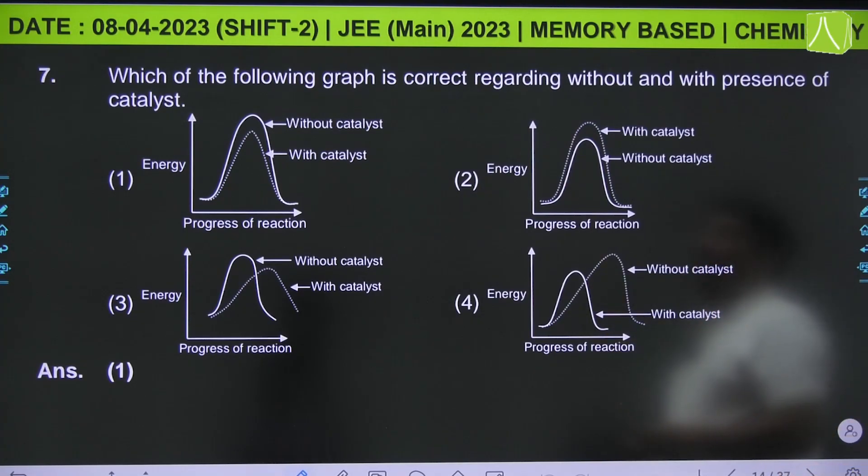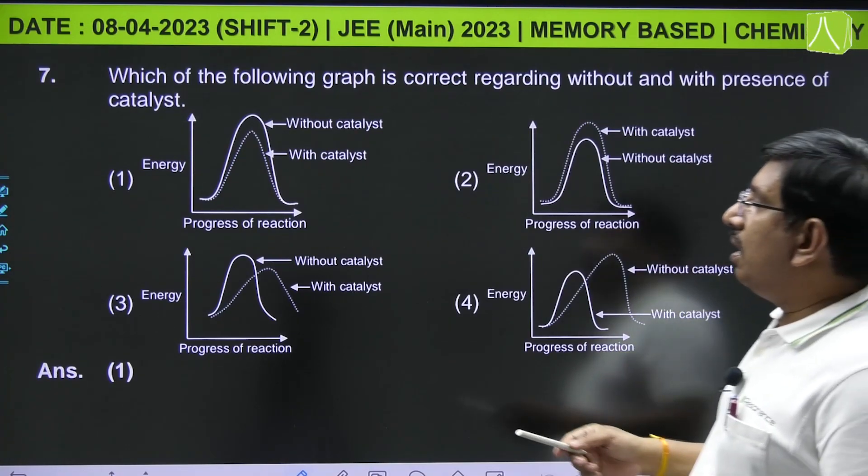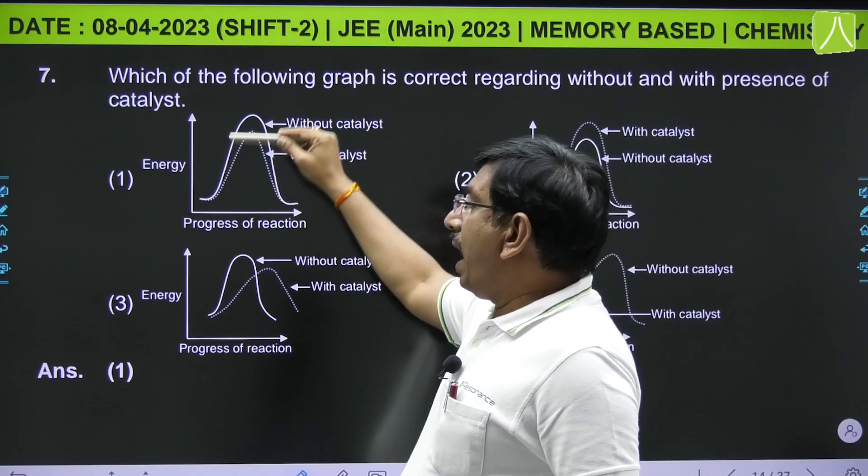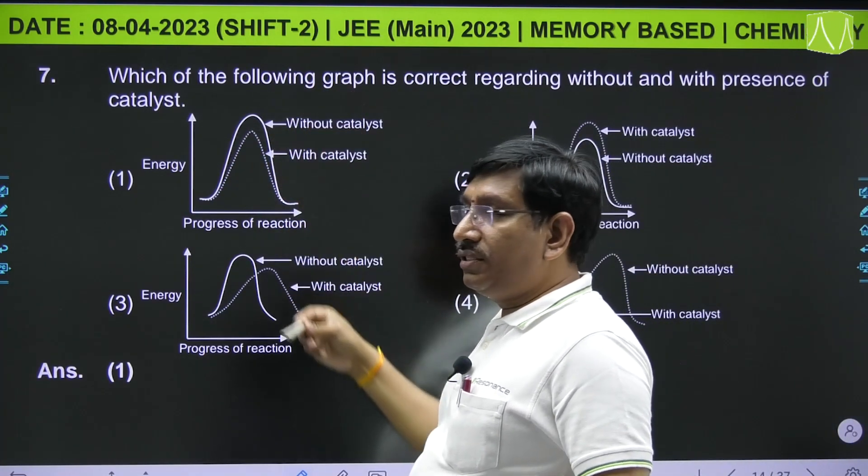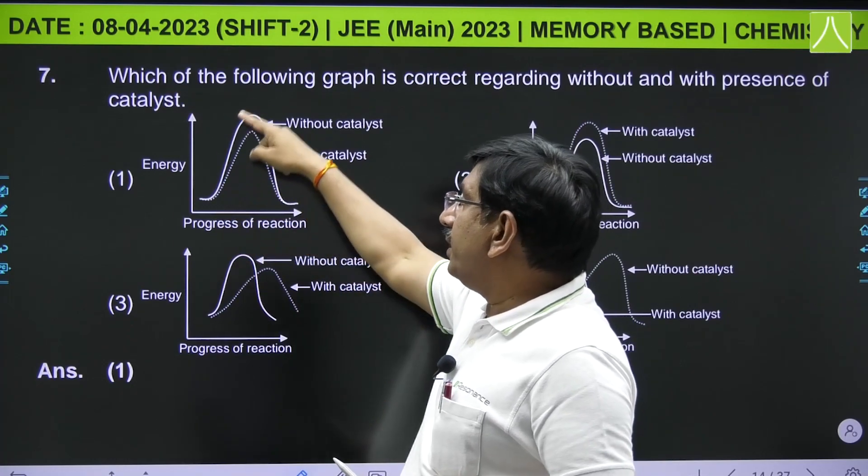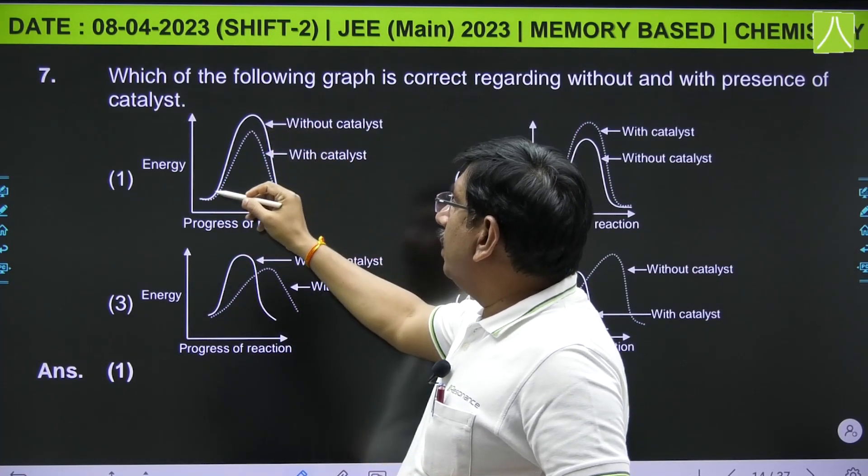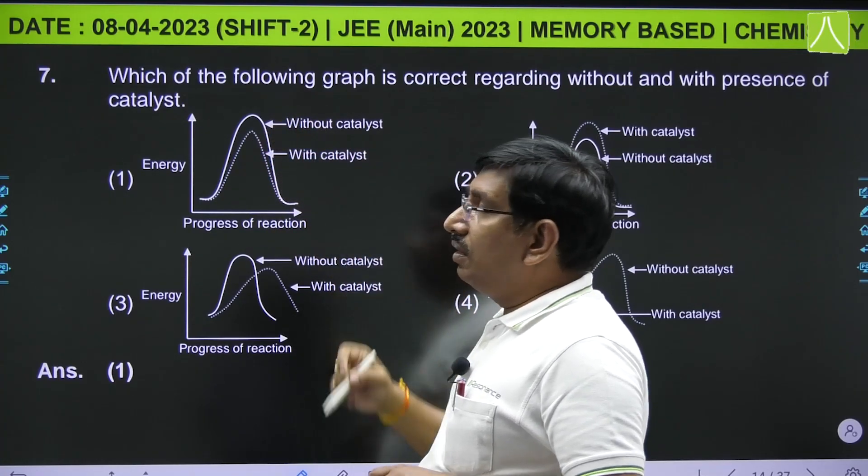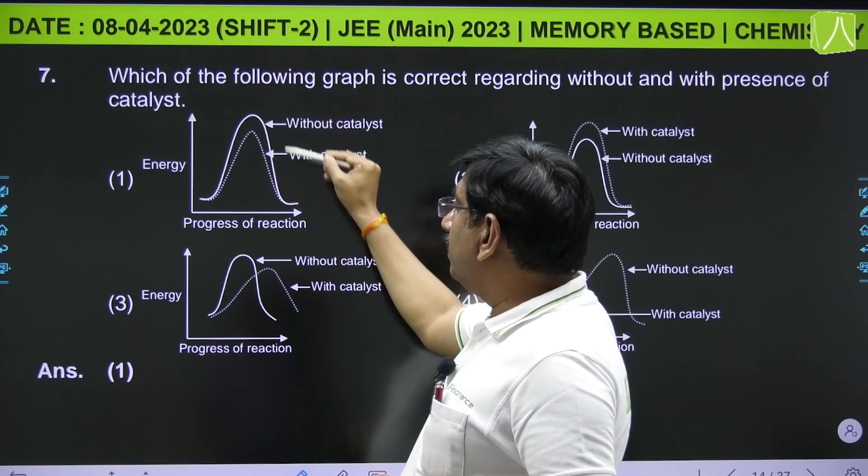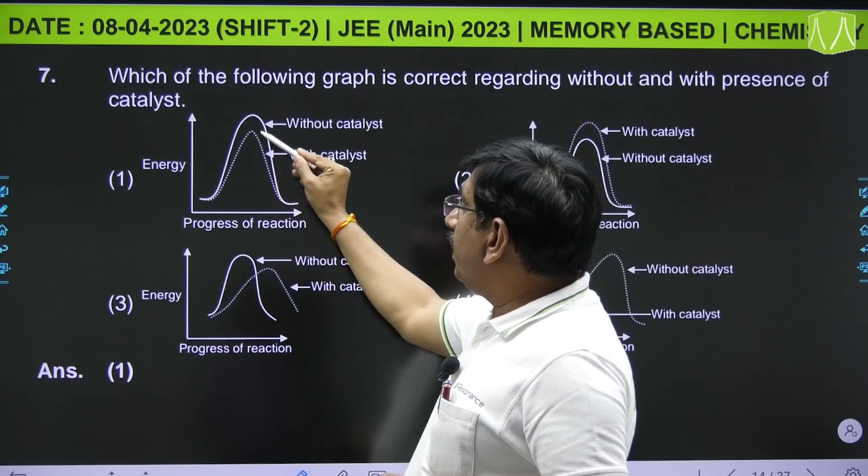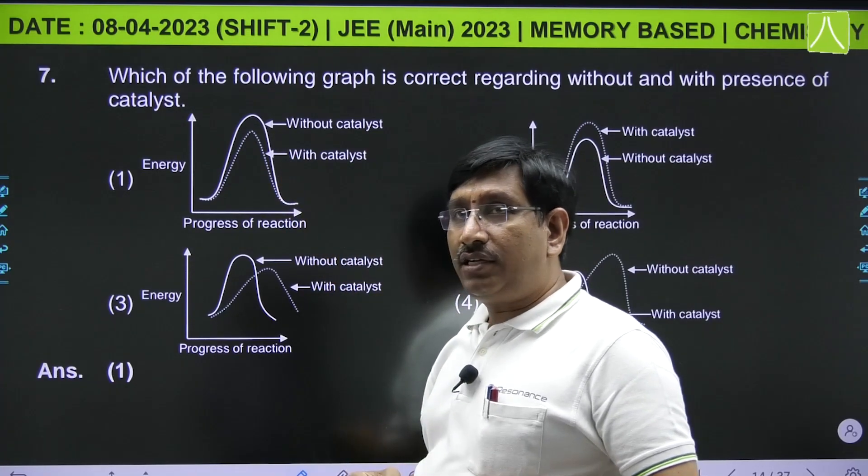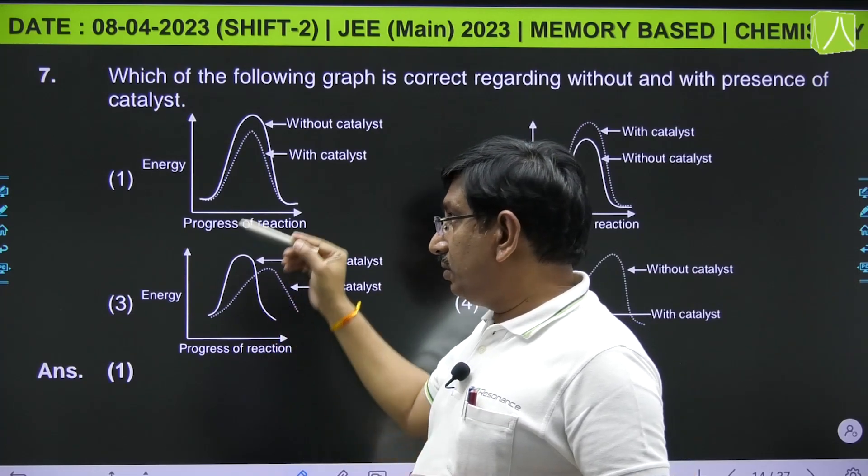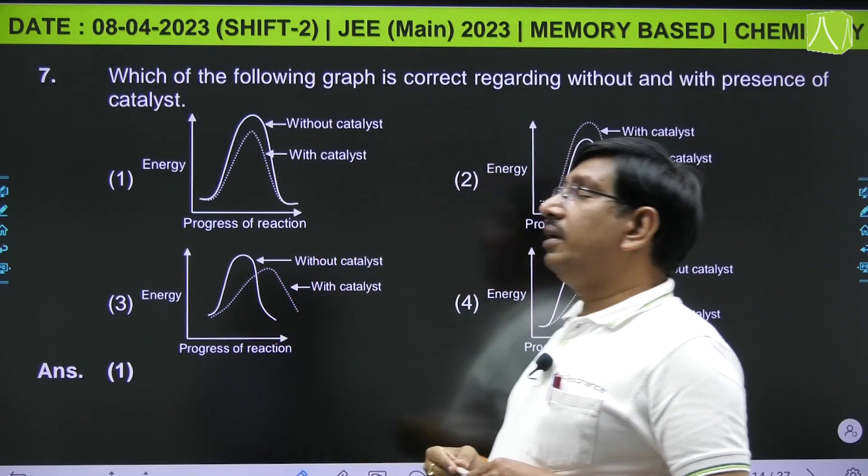Which of the following graph is correct regarding without and with presence of catalyst? In presence of catalyst, the activation energy is lowered and it takes a new path. The first solid line represents the reaction path in absence of catalyst, and this dotted line represents the reaction path in presence of catalyst. So the first one is the correct answer.